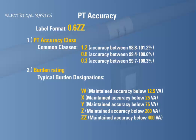In this example, the PT rated 0.6 ZZ would have an accuracy between 99.4 and 100.6%, as long as the burden of the PT remains under 400 volt amperes.